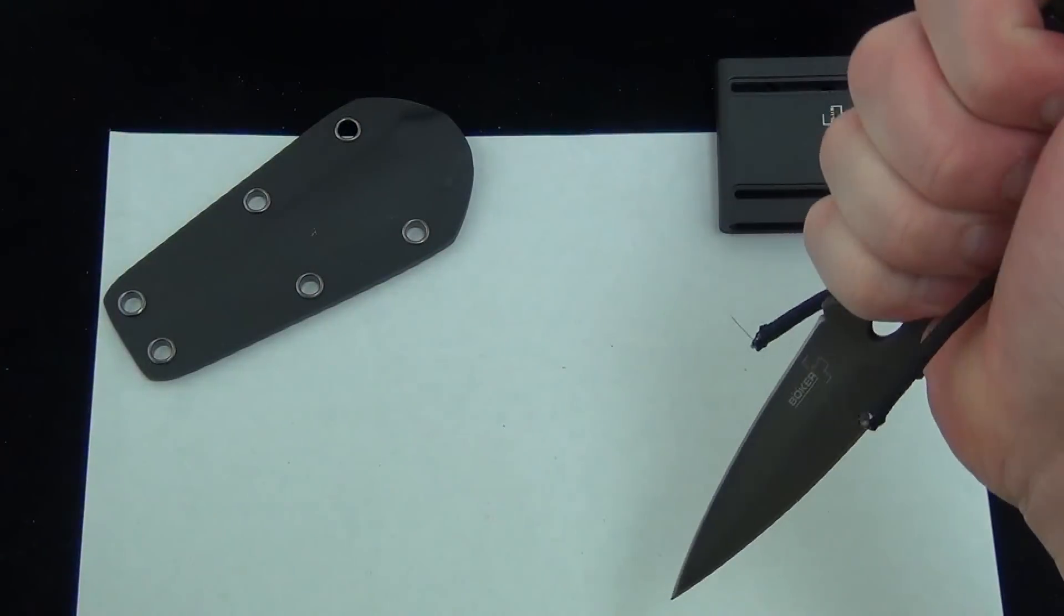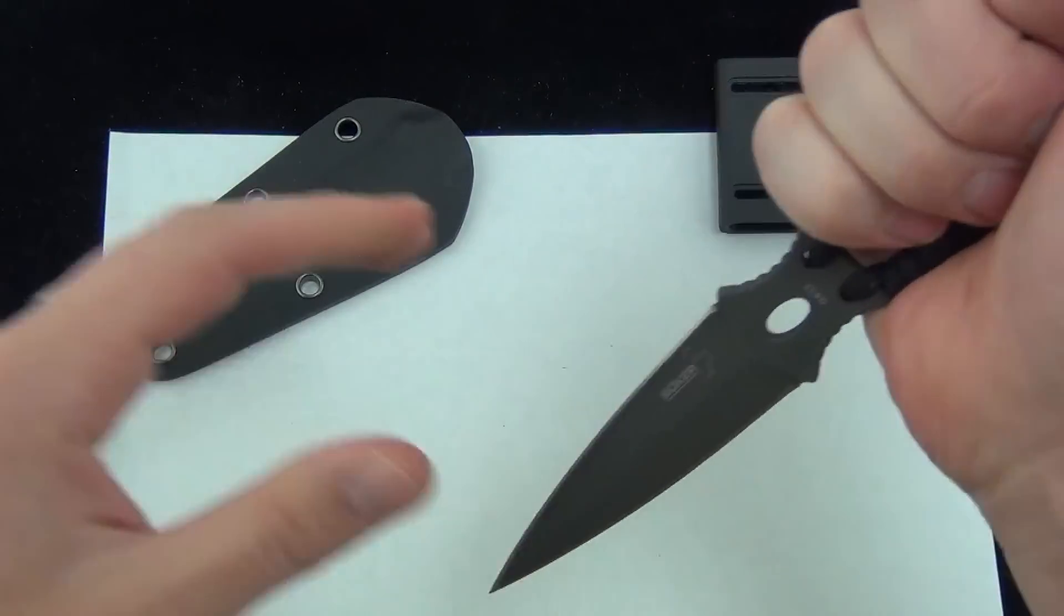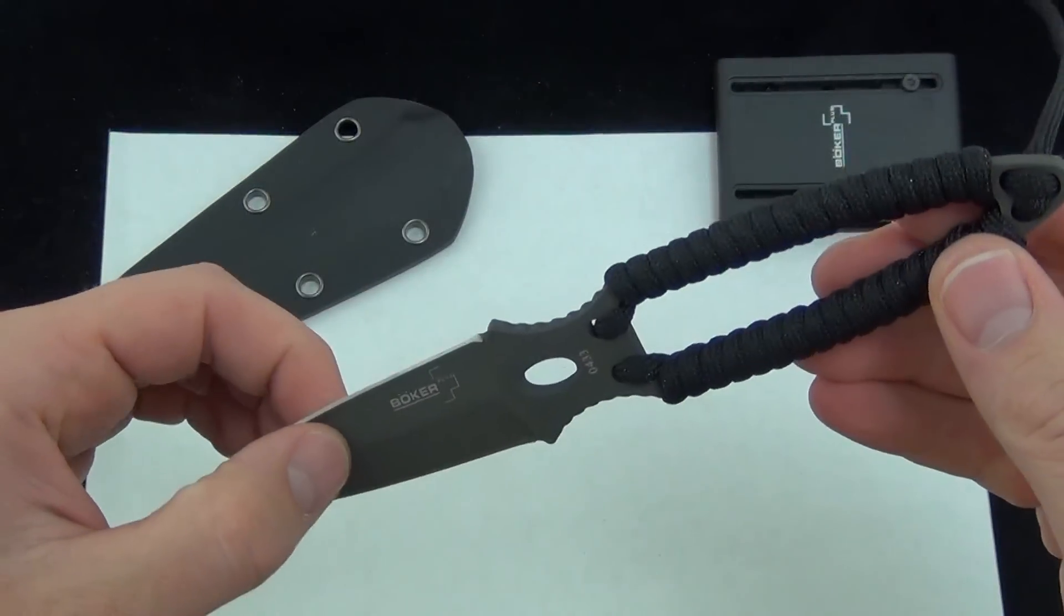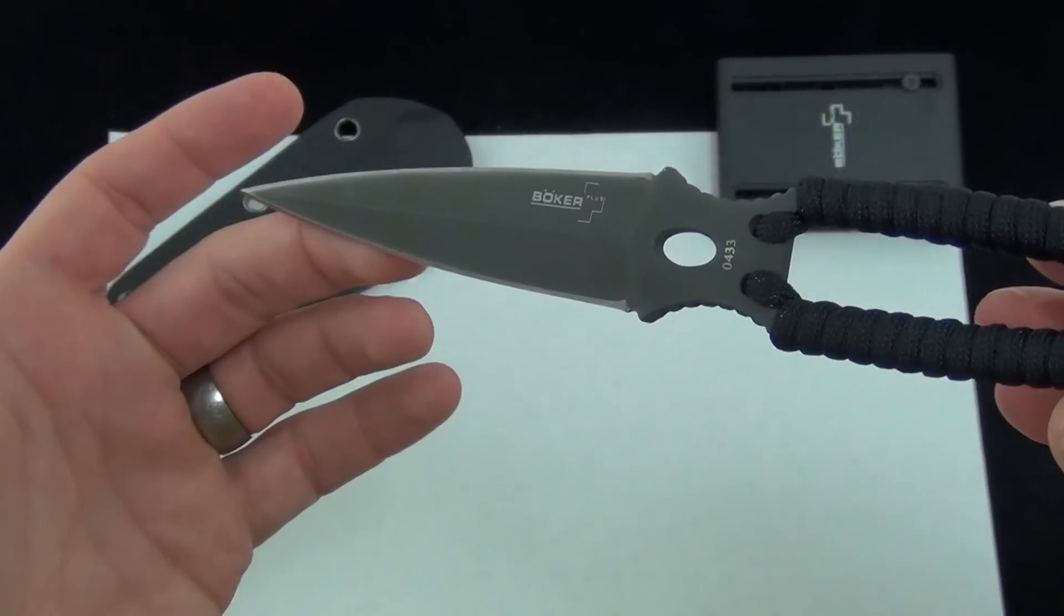You can also hold it in the dagger grip. It's got plenty of traction there. I actually do like the paracord handle wrap there. Super lightweight with that skeletonized handle, 2.3 ounces.